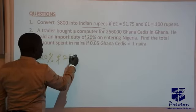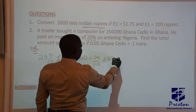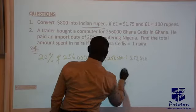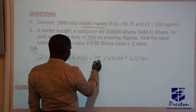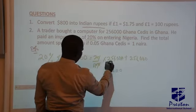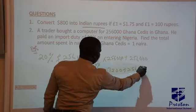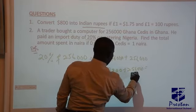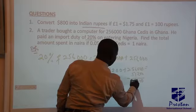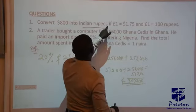20% of 256,000 equals 20 over 100 times 256,000. We simplify by cancelling, which gives us 51,200. Then we add that to 256,000, which gives us 307,200 Ghana cedis. This is the total amount paid for the computer in Ghana cedis.